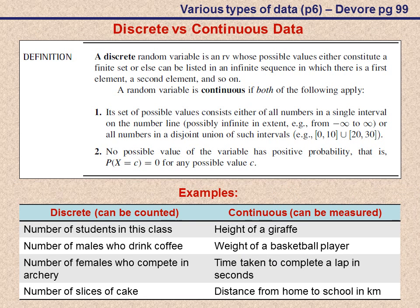Let's get back to quantitative data. Here, we have two measurement scales, namely discrete or continuous data. The definition of these data types can be found in your textbook by Devore on page 99. It's a bit of a technical definition. So we'll just go through it with some examples.